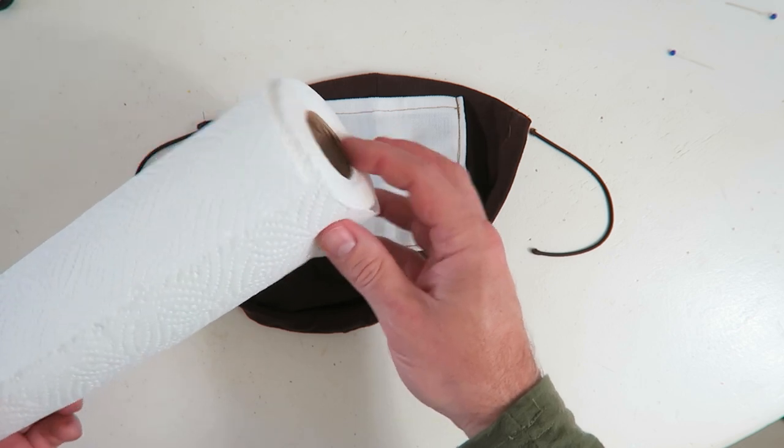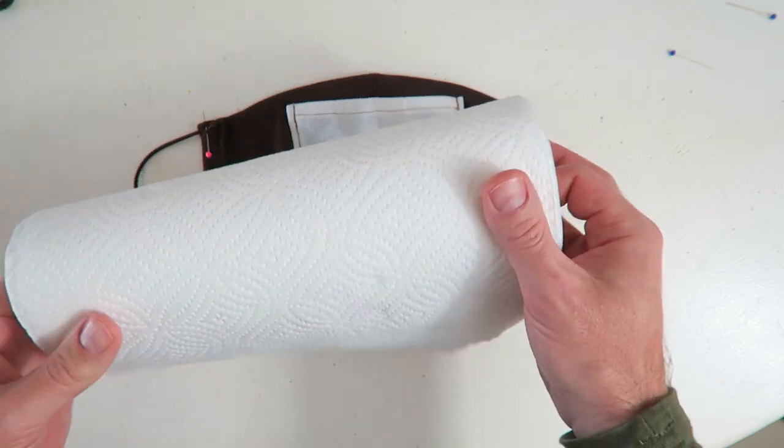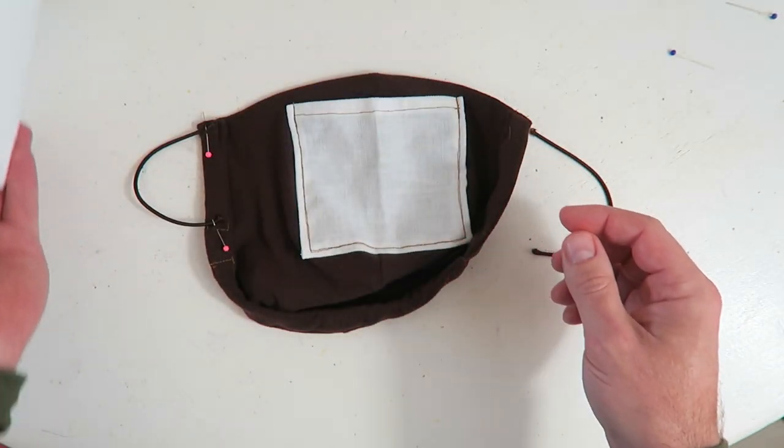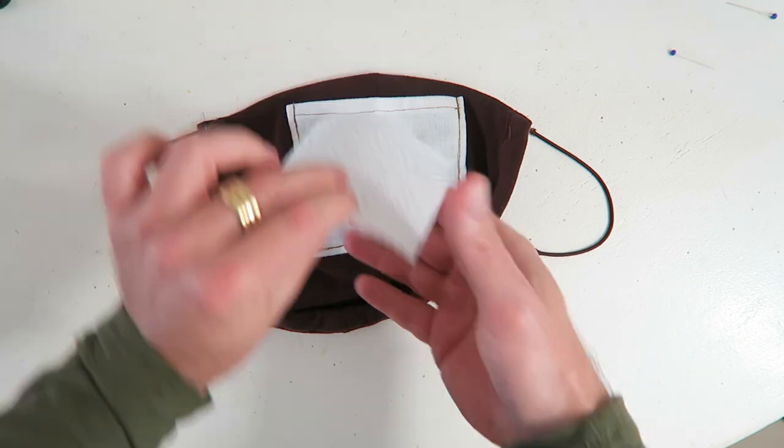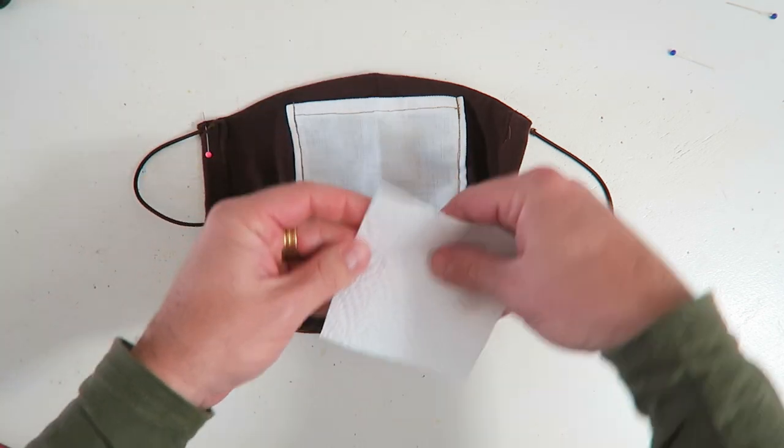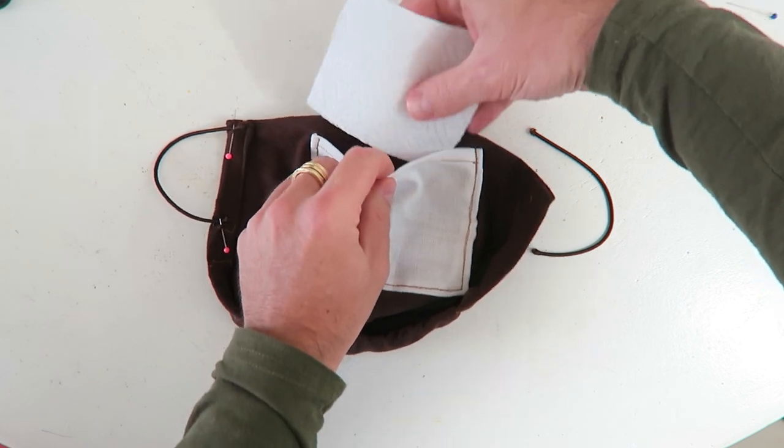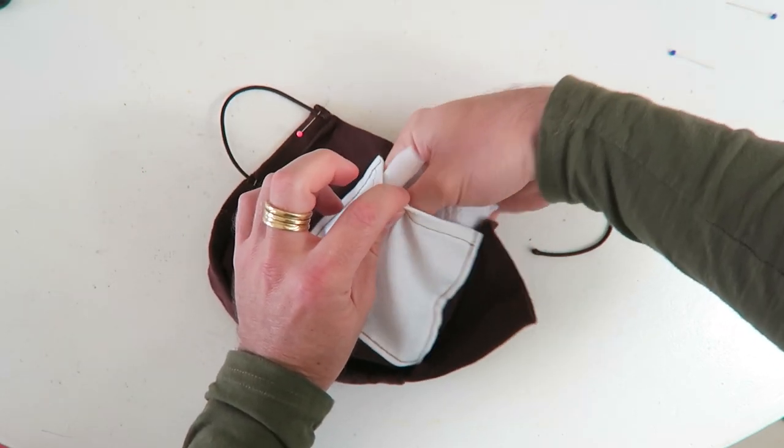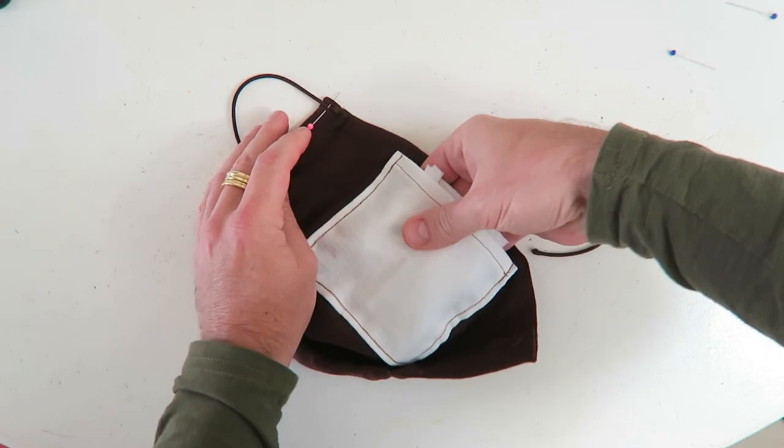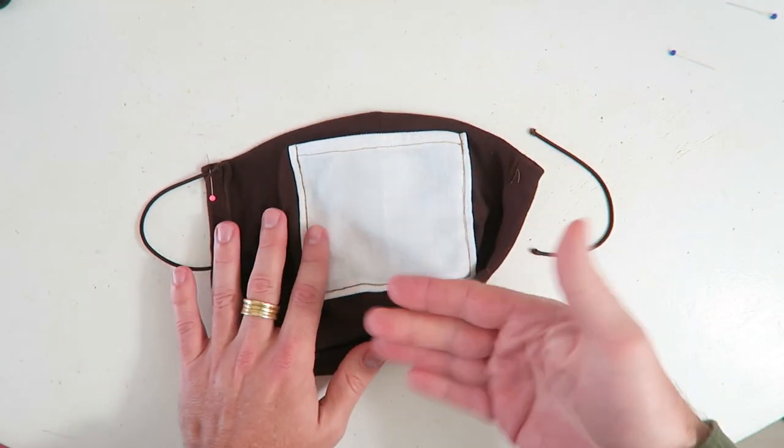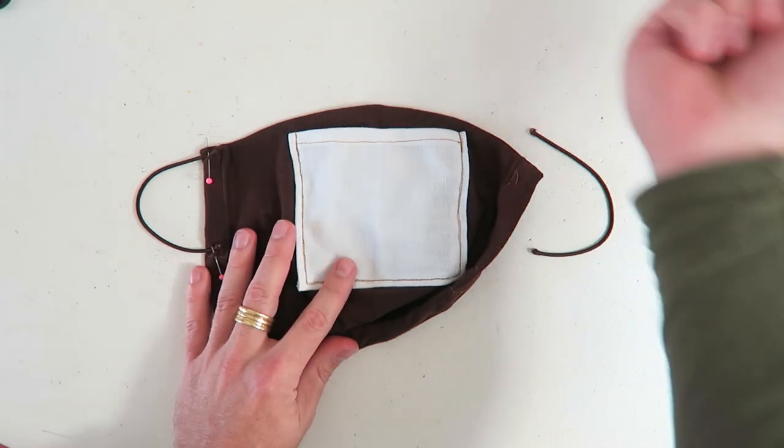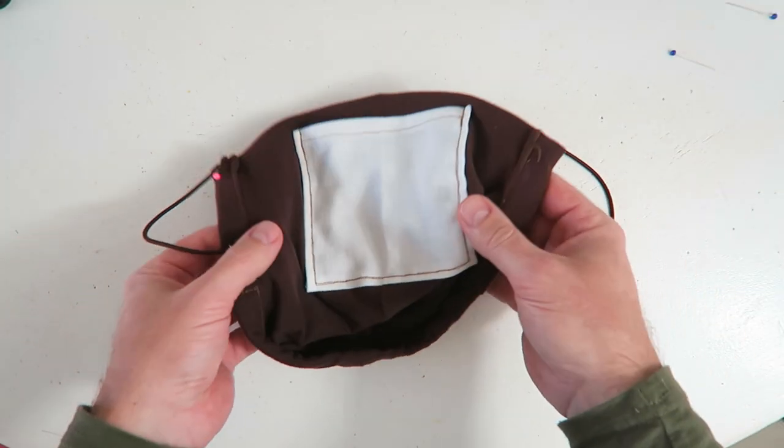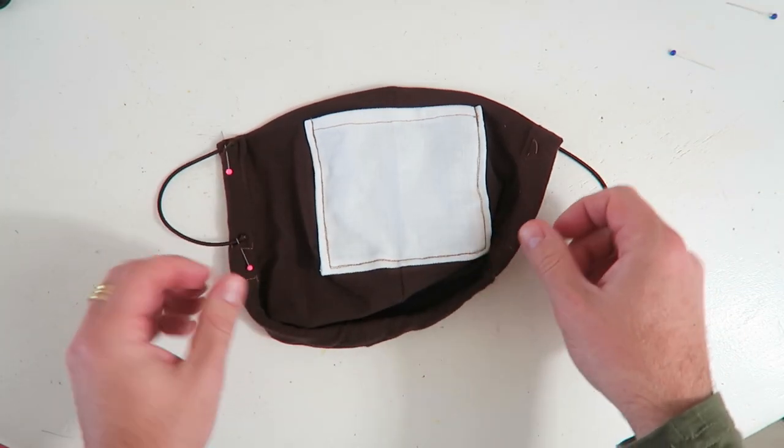And for your filter pouch we will insert a cut out square piece of normal kitchen toweling paper. We just feed the paper into our filter pouch. This is going to give you an extra layer of protection and after you use it you can just take it out and discard it and then you can wash your face mask.